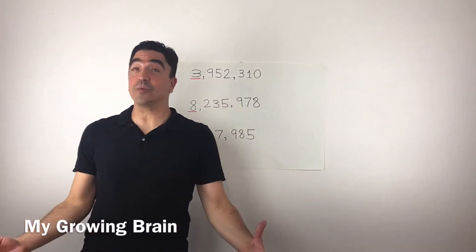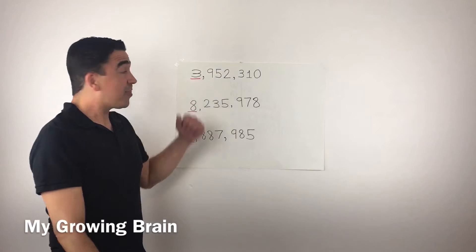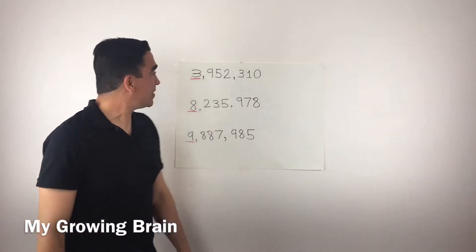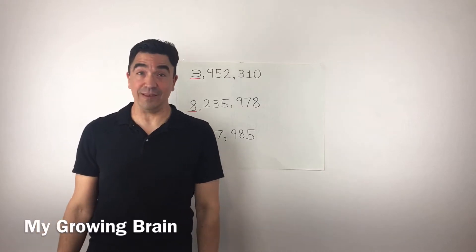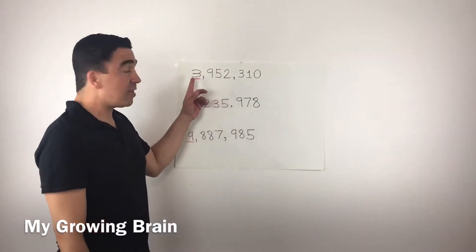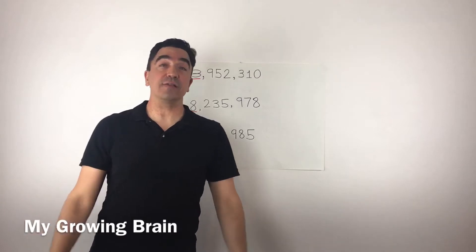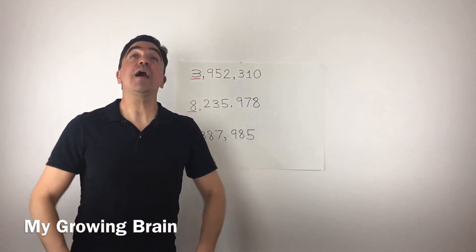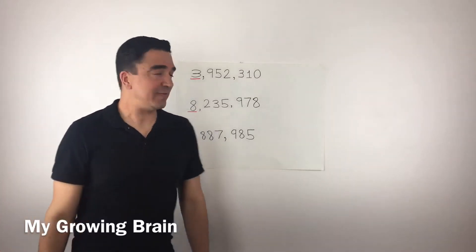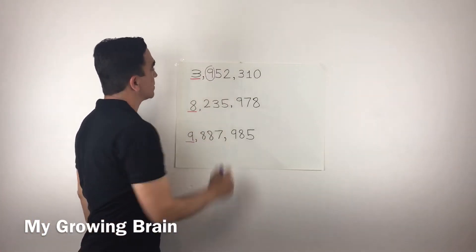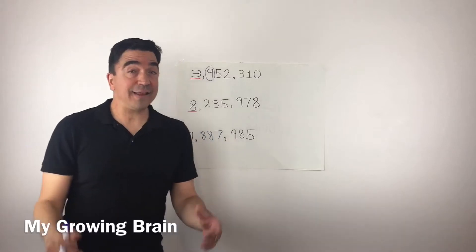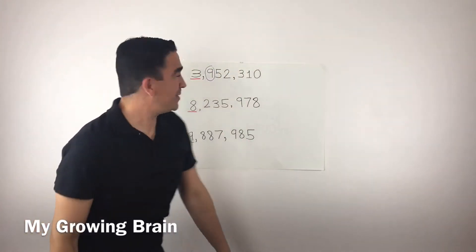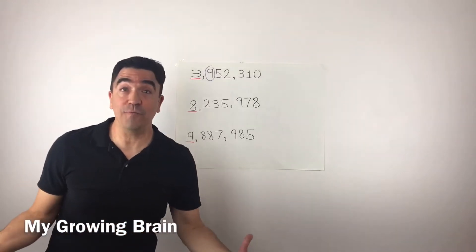Let's get started with the first one. 3,952,310. When I round the three in the millions place, I need to look at the nine in the hundred thousandths place. The nine is going to tell the three to go up.